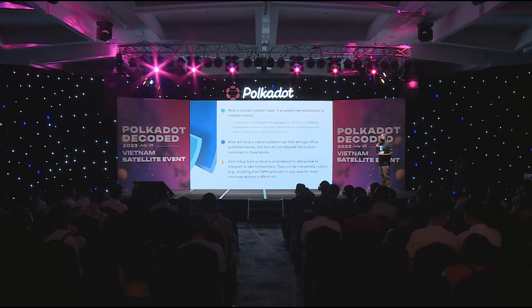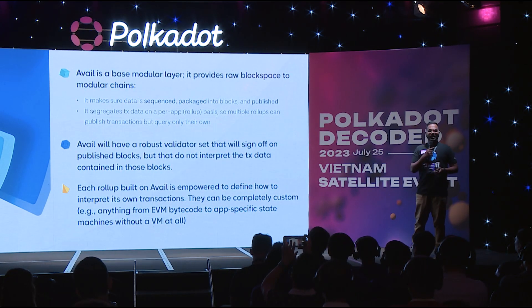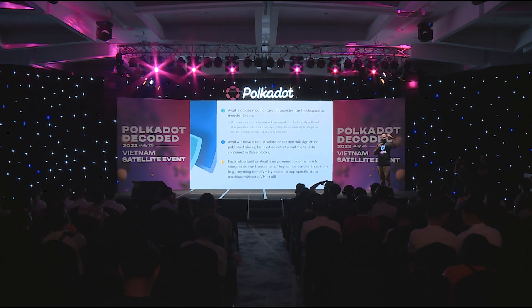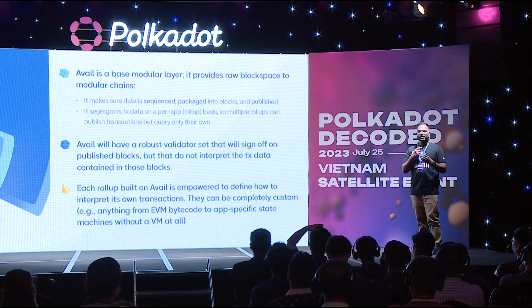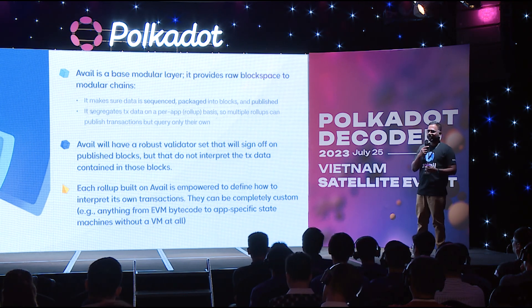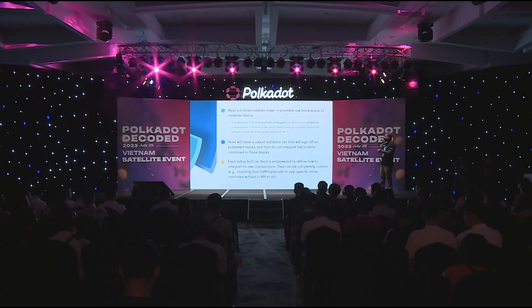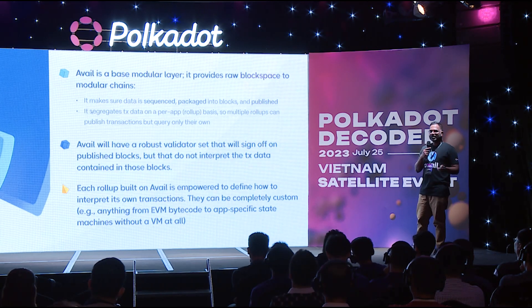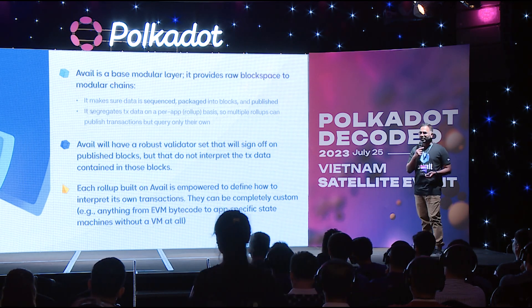Given that context — what is Avail? Avail is a base modular chain that does not do any execution. It has no smart contracts. It only focuses on data availability, and outsources execution to the rollups on top. Ethereum is also going to go in that direction, but it's taking a lot of time. You might have heard of dank sharding, which will be available in a few years. But we believe that base layers providing scalable data availability are the key.